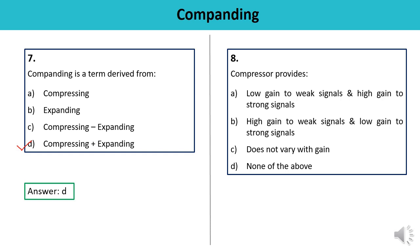Question number eight: What does a compressor provide? The function of the compressor is to provide high gain to weak signals and low gain to strong signals. It is used to boost up signals which have less strength, while signals with strong strength require only small gain. Weak signals are artificially boosted to improve the signal-to-quantization-noise ratio. The answer is B.